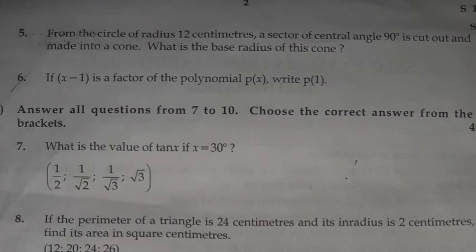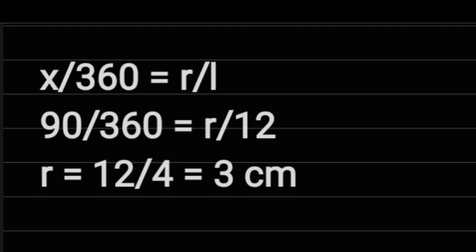Question 5: From the circle of radius 12 cm, a sector of central angle 90 degrees is cut out and made into a cone. What is the base radius of this cone? Answer: θ by 360 is equal to R by L. 90 by 360 is equal to R by 12. R is equal to 12 by 4 equal 3 cm.